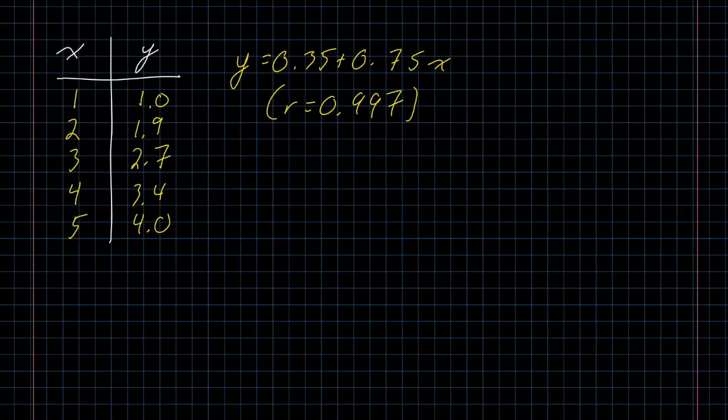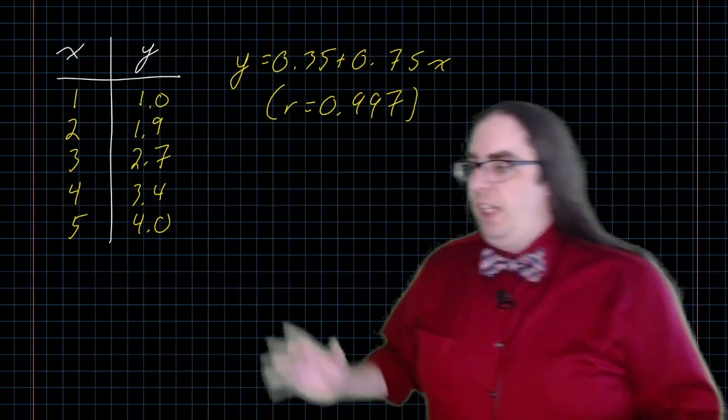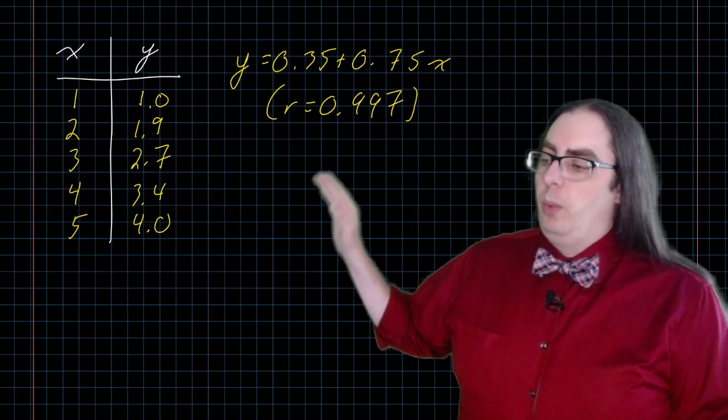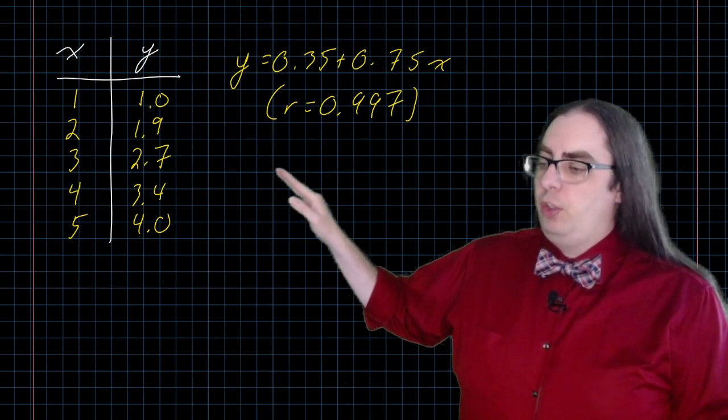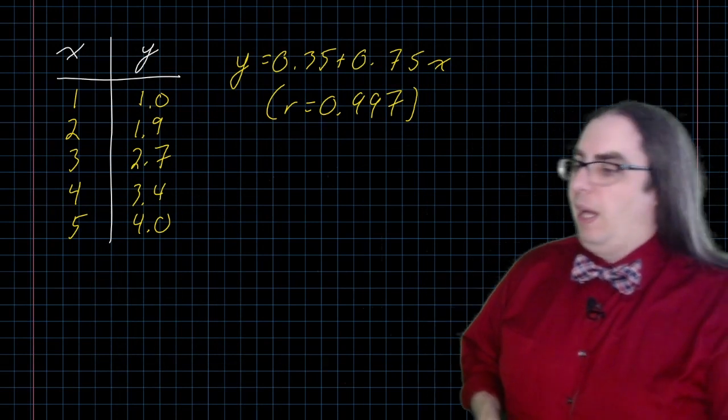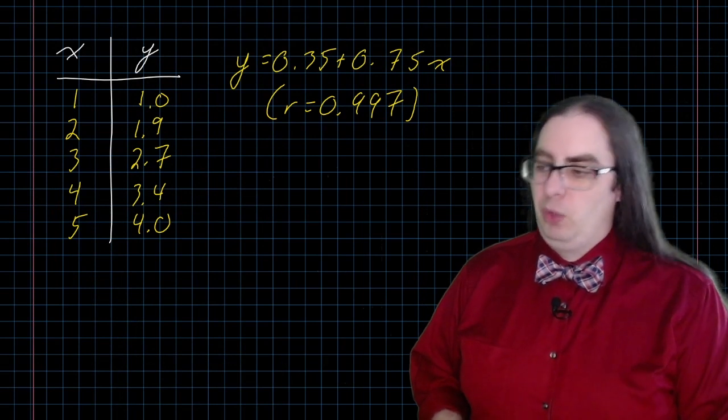So again, I'm not going to make you watch me go through the calculations again. I don't think it's interesting to watch that many times, and this video is going to be long enough as it is. But here I have another set of data. X values, 1, 2, 3, 4, 5, and Y values to go with it, 1.0, 1.9, 2.7, 3.4, 4.0. That means that decimal numbers going through and doing the calculations is not going to be fun, but it's certainly going to be doable.